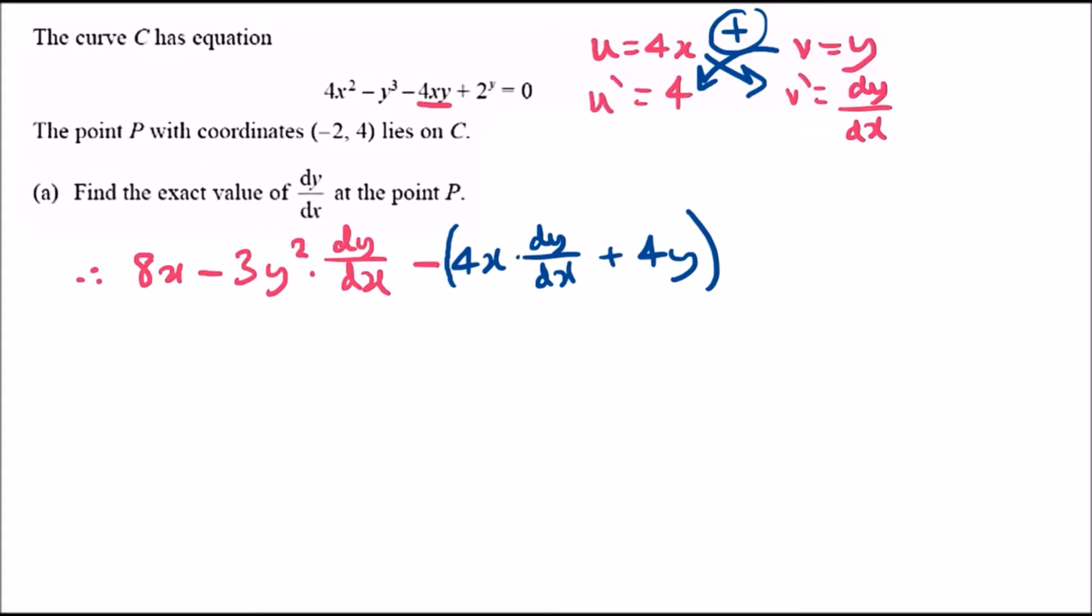Now we need to differentiate 2^y. There's a special technique for this. Suppose 2^y is represented in terms of exponentials and logs. We could say e^(ln(2^y)), which equals e^(y ln 2). I've made it e to the power y, which is a standard format, with log 2 as a standard number. To differentiate this, you drop log 2 down to the baseline.